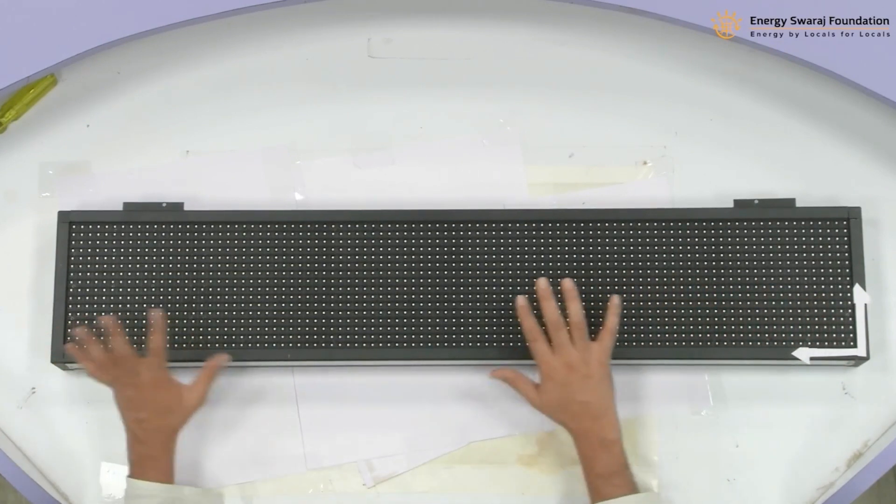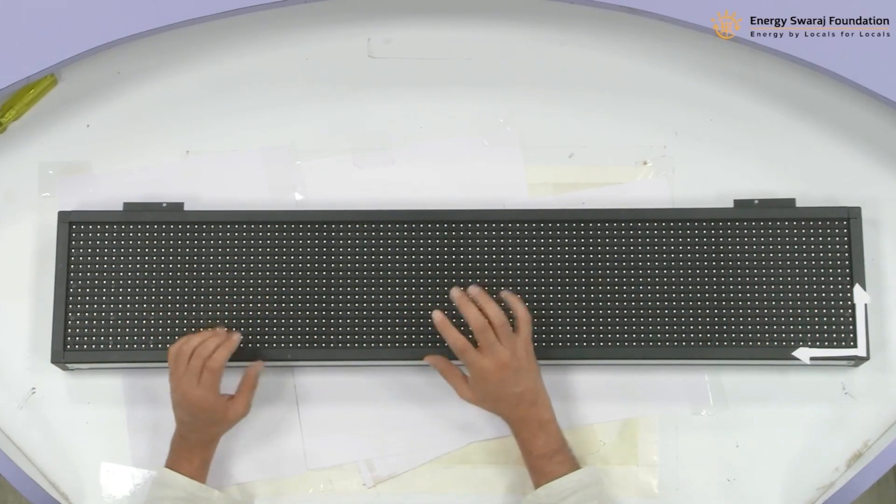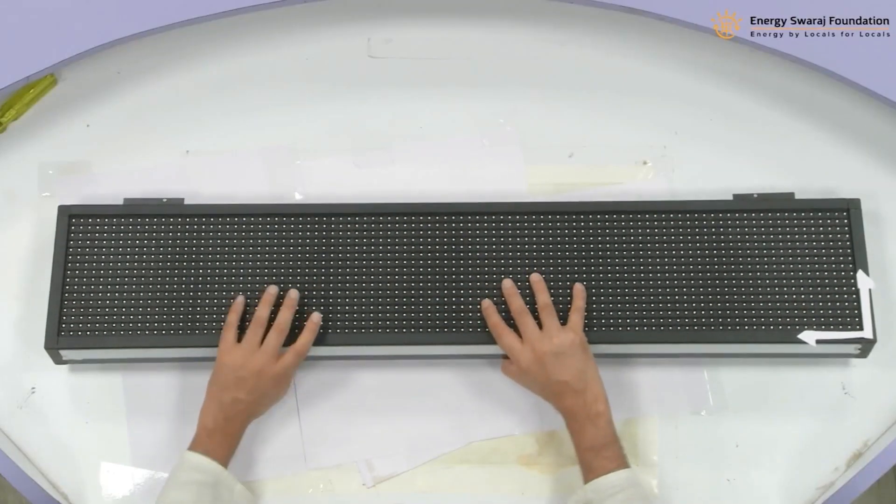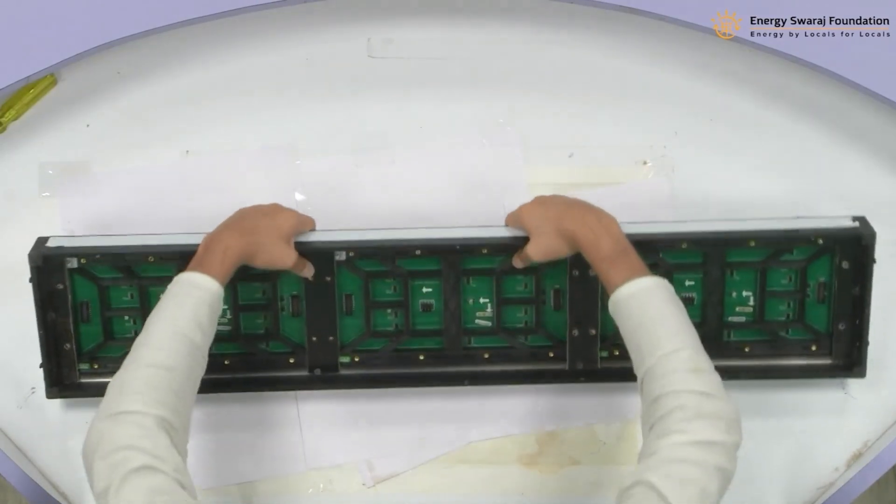Now, all these LED display modules are actually loose - they are not fixed with the frame. Now we need to fix it. What we need to do is flip it carefully. These are loose, so handle it carefully, and we are going to flip it like this. So this is the back side now.